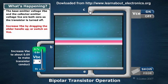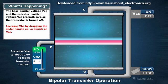Don't forget that conventional current flows from the collector to the emitter. Let's have a look at how it's set up. We have a depletion zone here. Initially, the base-emitter voltage is zero — in other words, there is no difference in energy from here to here. The collector-emitter voltage is also zero.